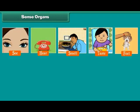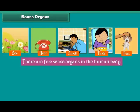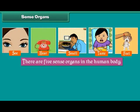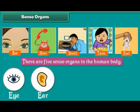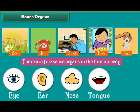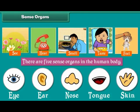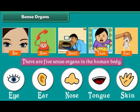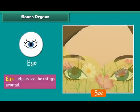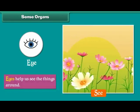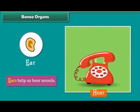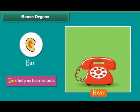Sense organs: The organs that help us to see, hear, smell, taste, and feel are called sense organs. There are five sense organs in the human body: eyes, ears, nose, tongue, and skin. Eyes help us to see the things around us. Ears help us to hear sounds.